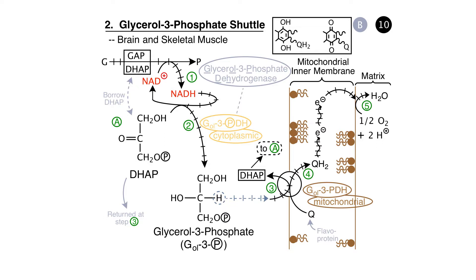We'll deal more with coenzyme Q in the next lecture, but for now it's a quinone that's easily reduced to its hydroquinone form, called QH2. The structures of Q and QH2 are shown in the box. QH2 is in the mitochondrial membrane, and the mitochondrial version of glycerol-3-phosphate dehydrogenase is present in the outer part of the mitochondrial inner membrane. Like NADH and FADH2, QH2 is a mobile electron carrier. QH2 allows the electrons that originated in glucose at the GAPDH step to flow through the electron transport chain into oxygen, which is reduced to form water. Effectively, in the glycerol-3-phosphate shuttle, we use oxygen to oxidize NADH back to NAD+, maintaining a constant supply of NAD+ to make glycolysis a continuous process.